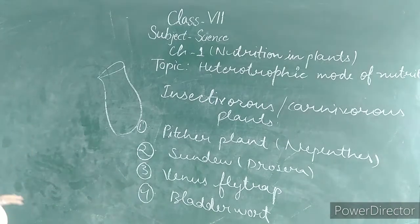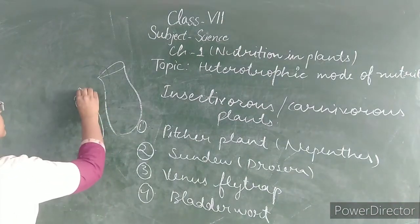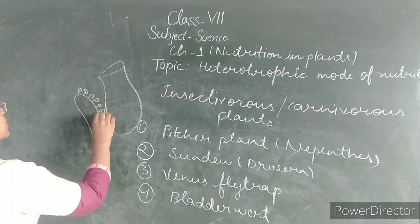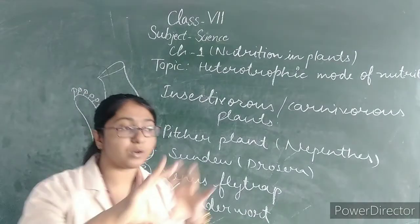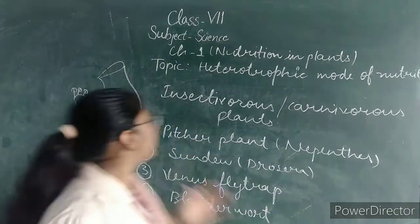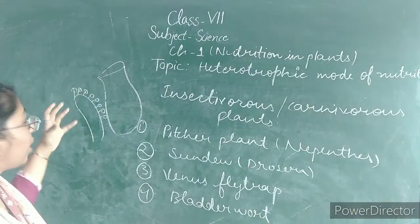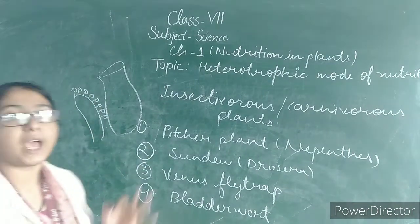Second is sundew. Sundew has sticky hair with juice drops like glue. When insects sit on it, they get stuck, and then the plant digests and absorbs them.